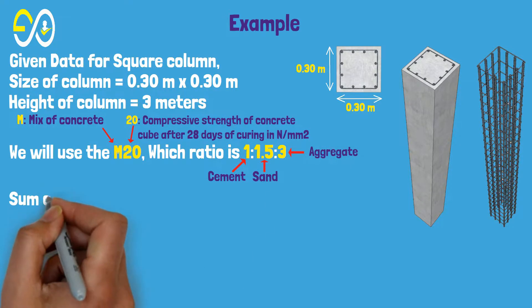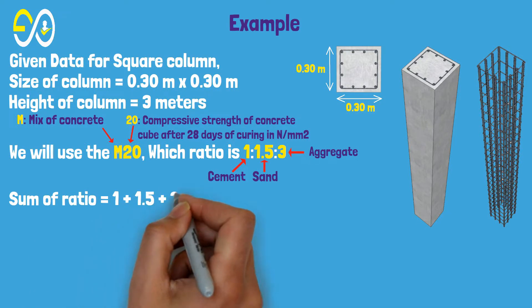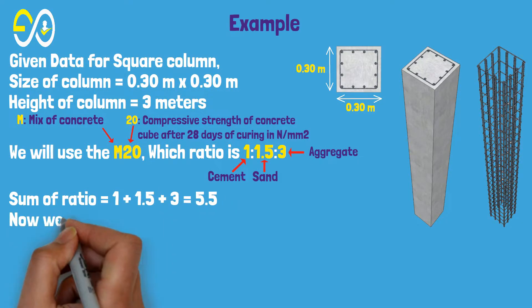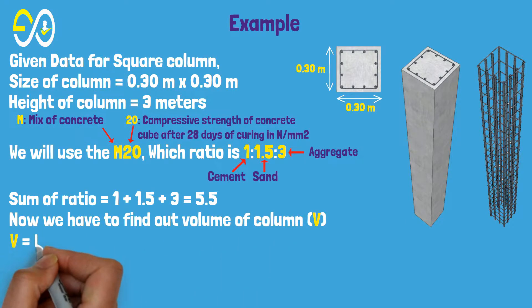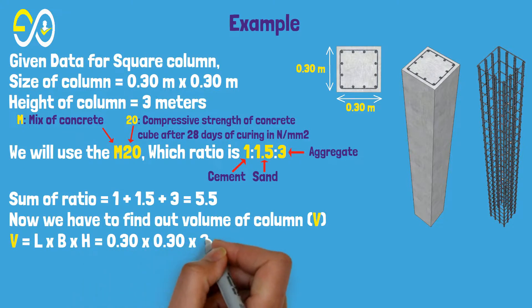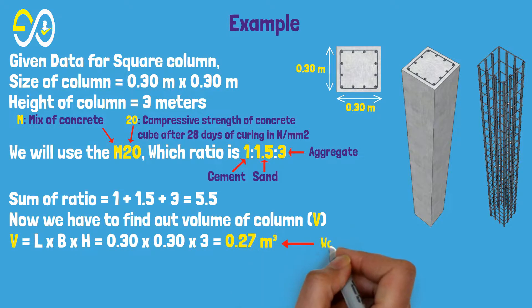Sum of ratio equals 1 plus 1.5 plus 3 equals 5.5. Now we have to find out the volume of column. Volume equals L times B times H equals 0.30 times 0.30 times 3 equals 0.27 cubic meters. This is wet volume.